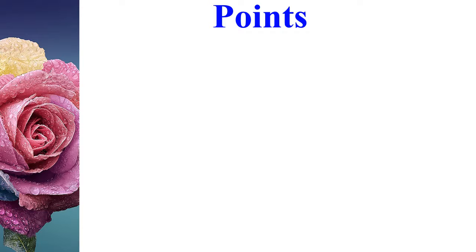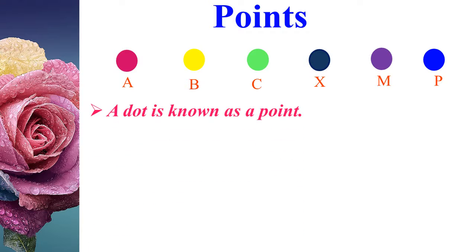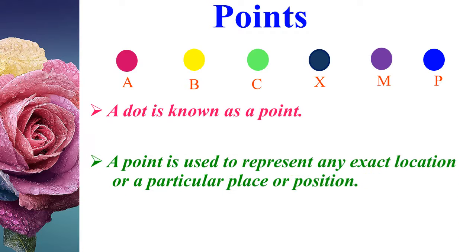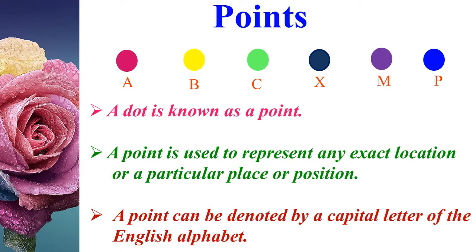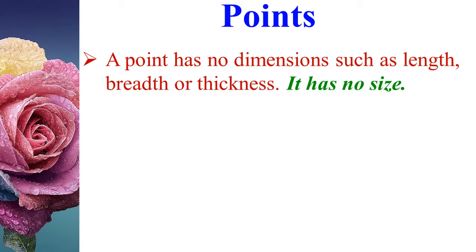Let us learn what is a point. A dot is known as a point. A point is used to represent any exact location or a particular place or position. A point can be denoted by a capital letter of the English alphabet — for example, point A, point B, point C, point X, point M, and point P. A point has no dimensions such as length, breadth, or thickness; that is, it has no size.